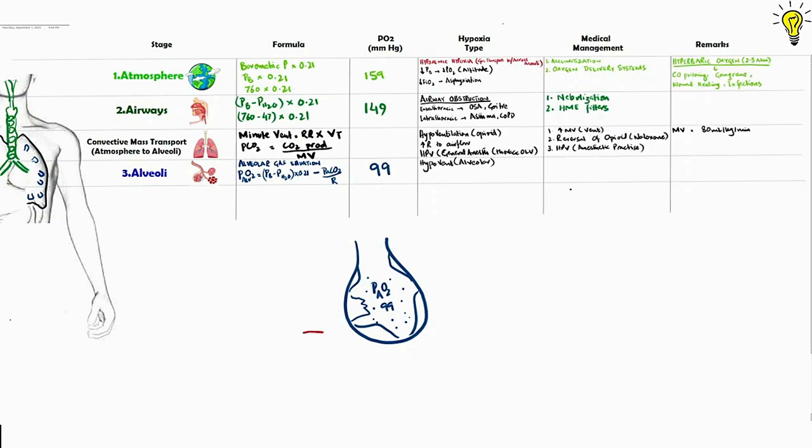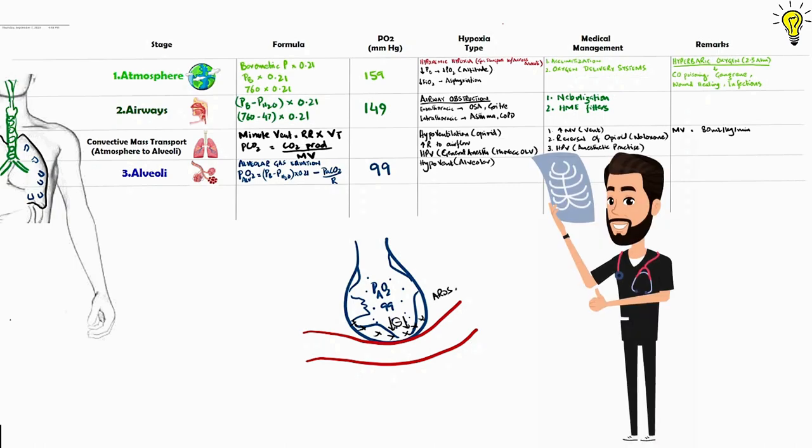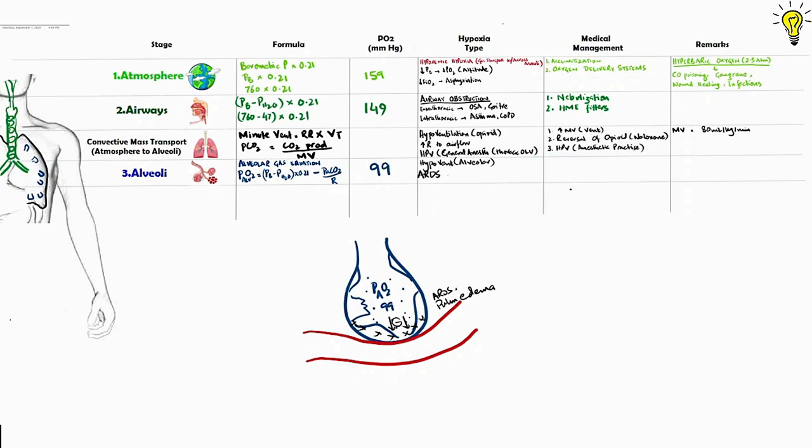Now any disease causing alveolar capillary interface disruption and impairing the fine diffusion of oxygen from alveolar epithelium through the capillary endothelium will cause hypoxia. So adding ARDS, pulmonary edema where alveoli are flooded with water or consolidations of pneumonia will cause hypoxemic hypoxia.